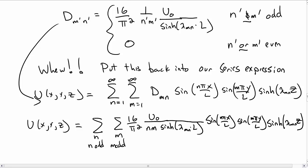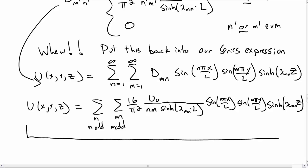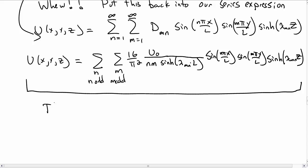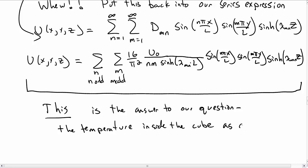This is quite the expression, quite the solution - it's a double sum, a double infinite sum, is what our solution is. But it is the answer to our question: the question we were after was what is the temperature inside the cube as a function of x, y, and z. This is it. It doesn't get more simple than this. The question is what do we do with this, how do we understand this?